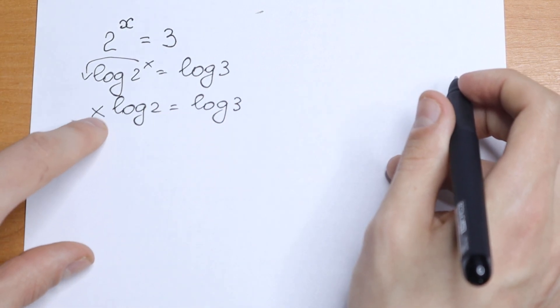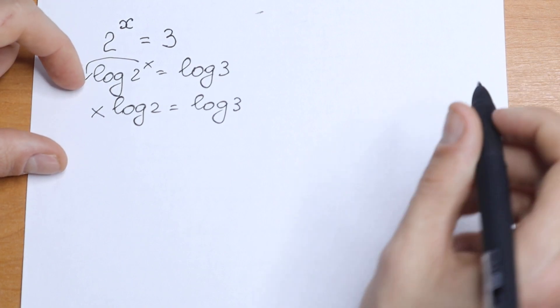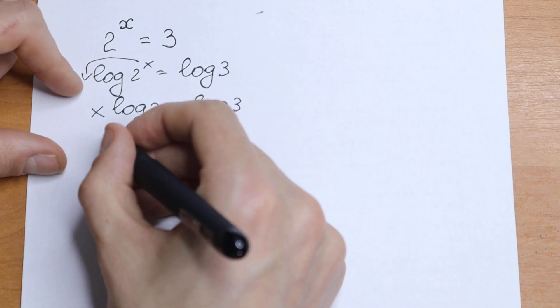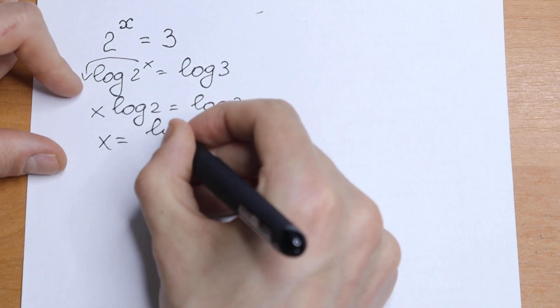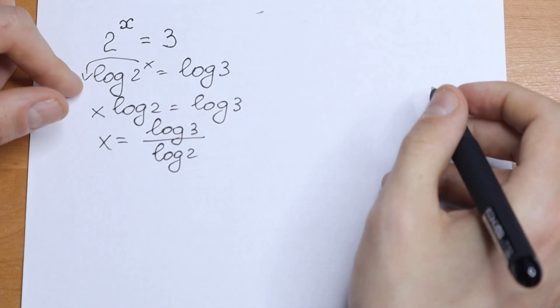This is a number. This is a number. This is our variable. We can find it and we need to find it. We need to divide both sides by log 2. What we will have? x equal to log 3 divided by log 2. This will be our answer.